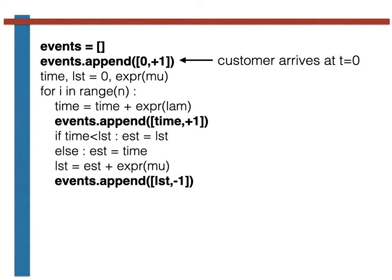The events list is initially set equal to an empty list. We then immediately append an element to the list to indicate that the first customer arrives at time t equals zero. Each element in the list will be a pair of numbers. The first of these numbers is the time that something happened and the second element describes whether the length of the queue increased by one or decreased by one at that time. We thus need to append to events the times at which the customers arrived in the queue, which is this line here, and the times at which customers left the queue, which is this line here.